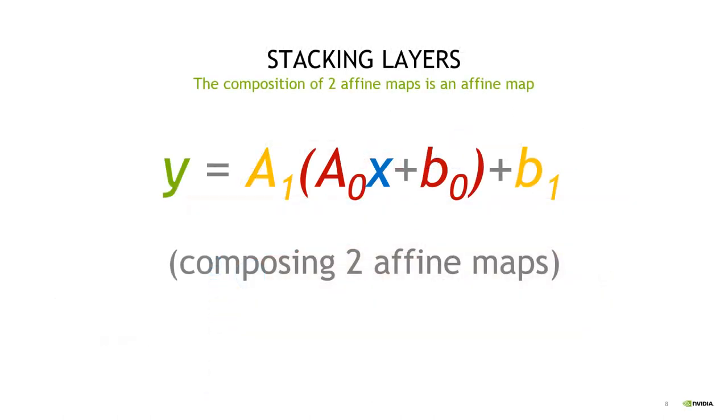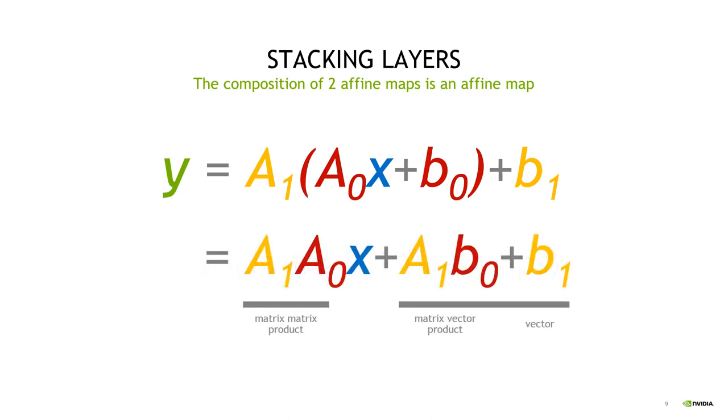Now you might ask, what happens if I stack many linear layers? And let's just have a look at it. First of all, we multiply the input x with the matrix A0 and then add the bias vector b0. After that, we take the output of the first linear layer and pass it to a second one. Then we compute A1 times the output plus b1. Subsequently, we can expand the expression and gain the result A1 times A0 times x plus A1 times b0 plus b1.